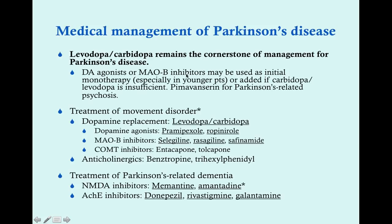A newer drug, pimavanserin (Nuplazid), approved in 2016, is a serotonin inhibitor acting as an atypical antipsychotic. Patients with Parkinson's can develop psychosis from their medications or the degenerative process itself. Previously, clozapine, quetiapine, or olanzapine were used, but these are dopamine antagonists that worsen movement symptoms. Pimavanserin treats psychosis without exacerbating motor symptoms.